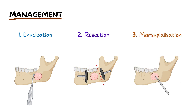Marsupialisation is another technique, which usually involves creating an opening in the cystic lesion, allowing it to shrink over time. It is typically a preliminary step, reducing the tumour size before a more definitive surgical approach.